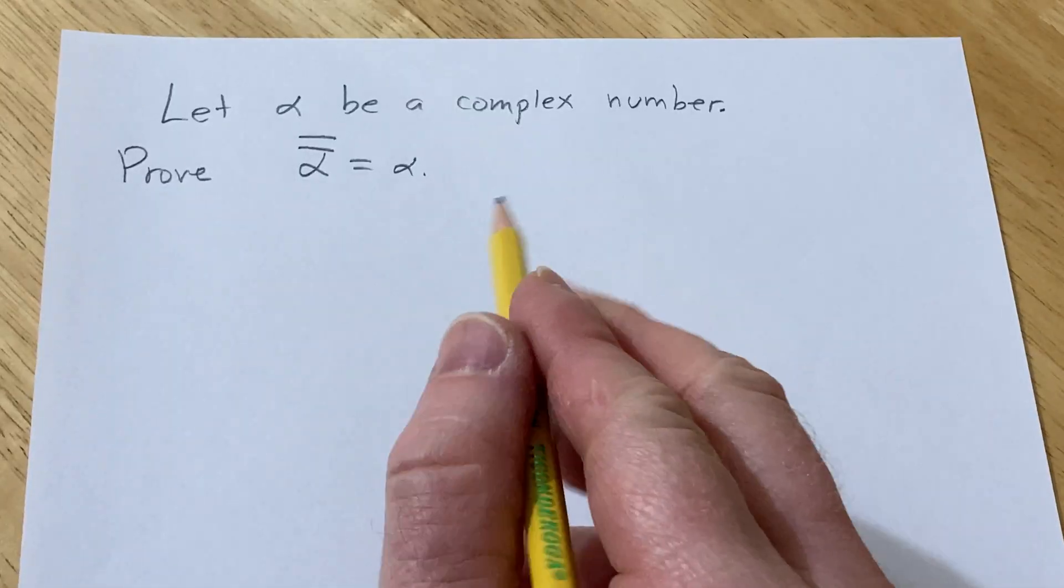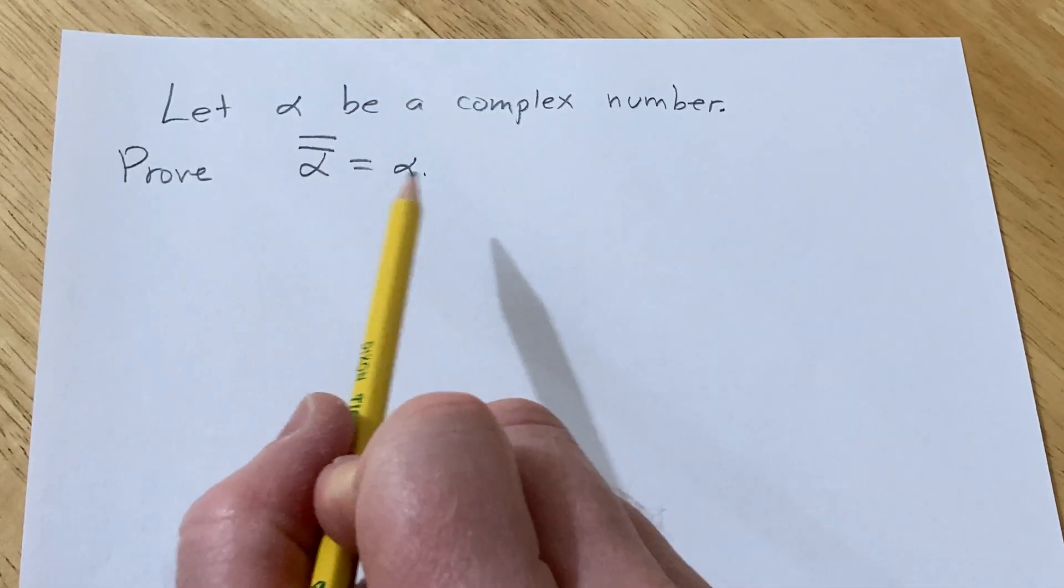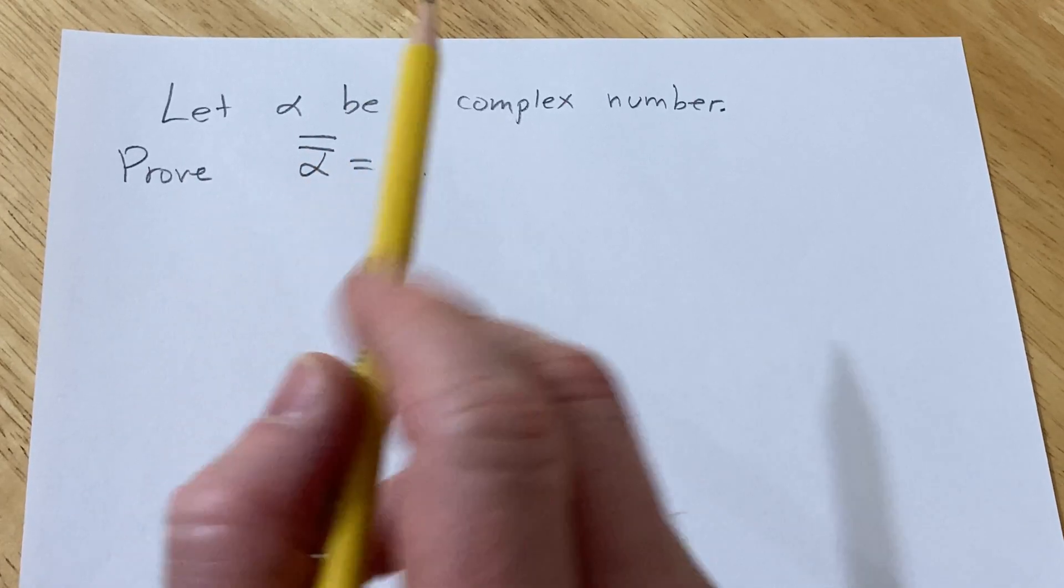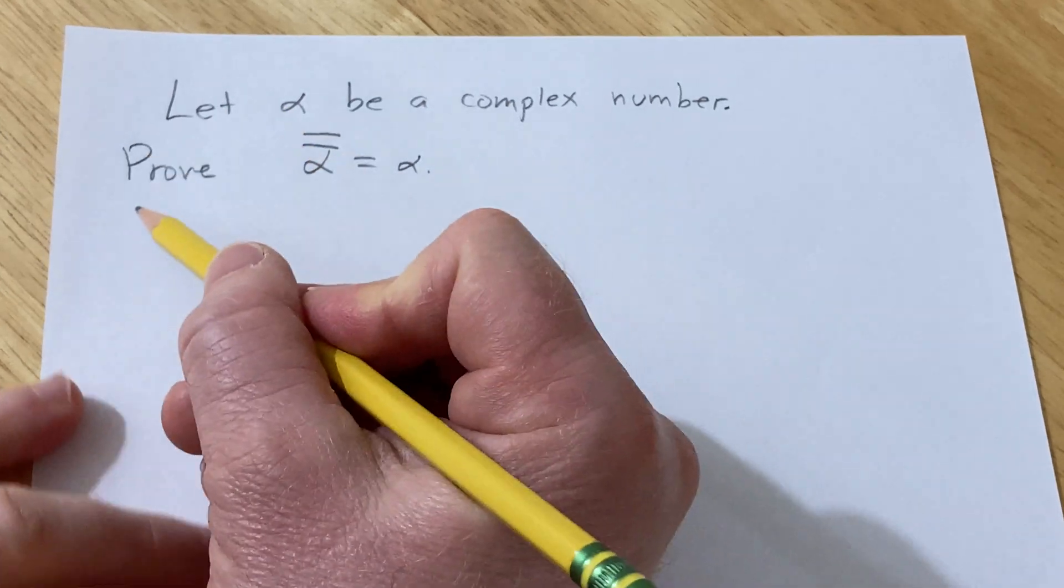Hi, in this problem we are going to do a simple proof. Let alpha be a complex number and we're going to prove that the conjugate of the conjugate of alpha is alpha. Let's go ahead and work through it.